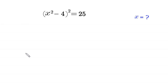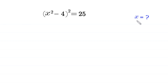Hello, welcome to how to solve this very nice algebra equation: (x² - 4)² = 25. We need to find all possible values of x. We will solve it by two methods, so let's start.